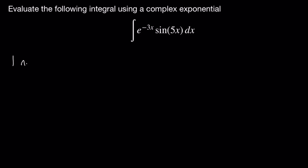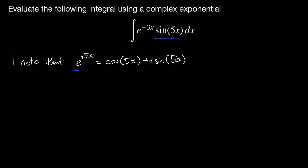First, I'm going to note that the complex exponential e to the i5x is equal to cos 5x plus i sine 5x. I intentionally choose this complex exponential because my integrand contains sine 5x. So from this I know that sine 5x is equal to the imaginary component of e to the i5x.